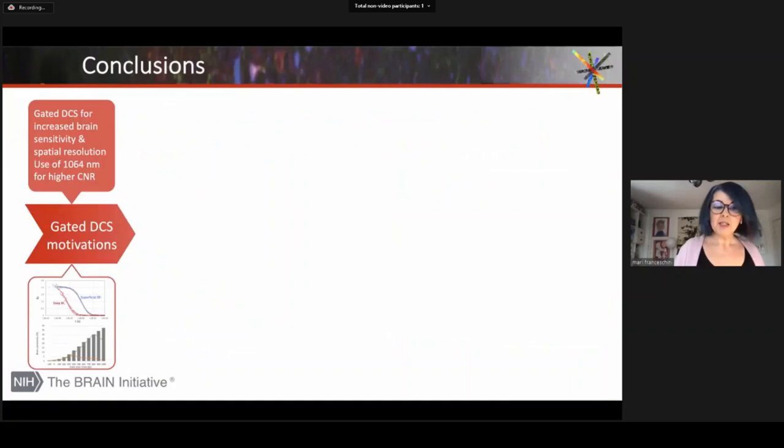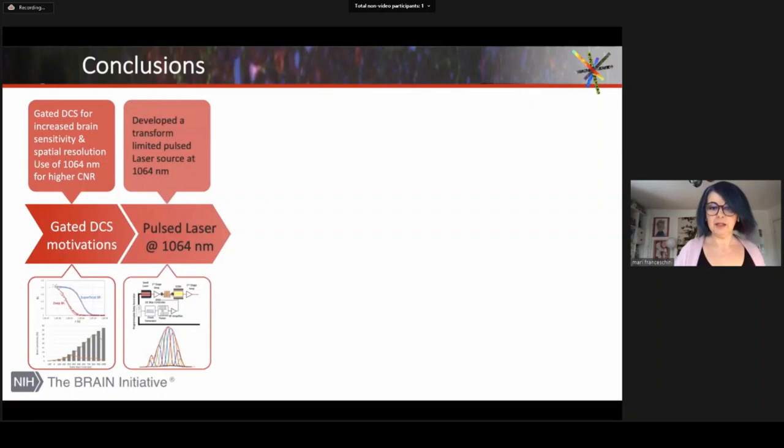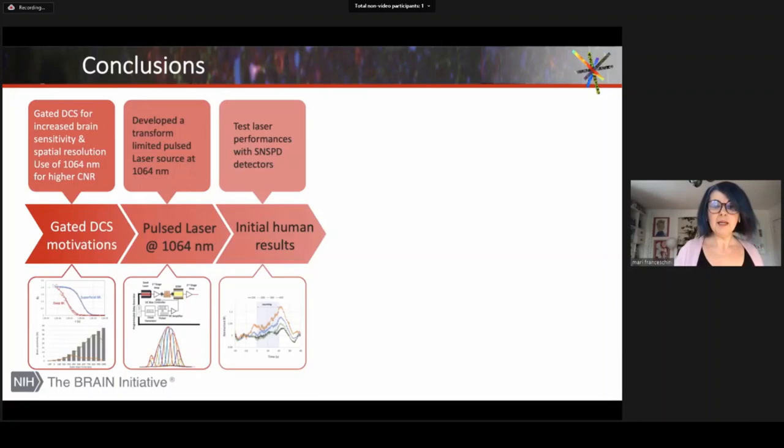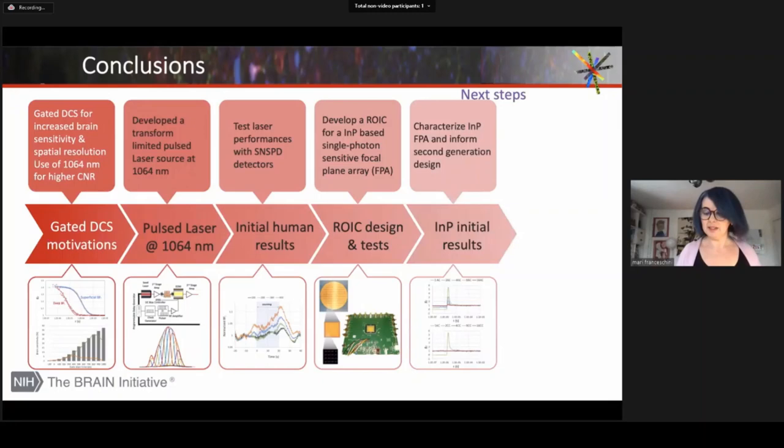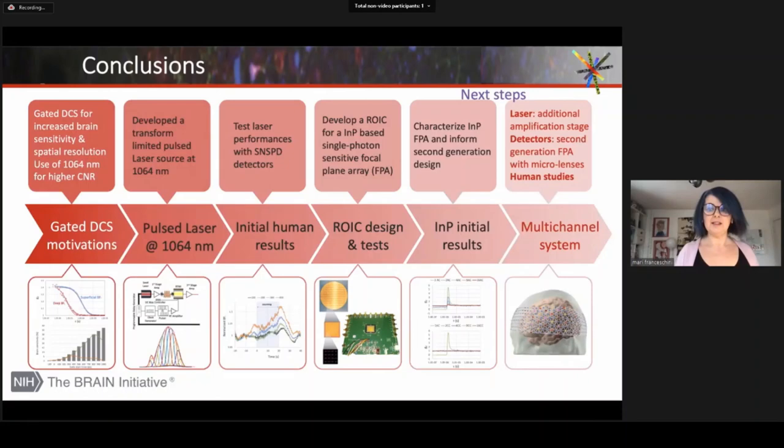So in conclusion, during the last year and a half, we have assembled a pulsed laser at 1064 nanometers and started the human subject measurements with it. And we have designed and tested the first ROIC and the first FPA detector. And we're now running tests to characterize this detector and inform the second generation. So the next steps will be for the laser to add another amplification stage to be able to illuminate multiple locations. For the detector, build the second generation FPA with the micro lenses, and then continue our human tests with the first and second generation detectors.